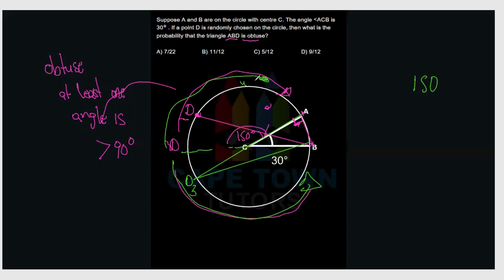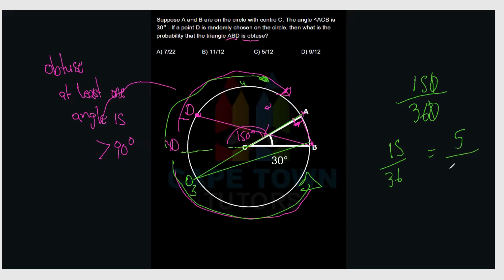So if D appears anywhere in that 150-degree arc, the triangle is obtuse, out of the entire circle which is 360 degrees. The probability is 150 over 360. Simplifying by a factor of 3 gives 5 over 12. The answer is option C. Hopefully that makes sense — drop a question in the comments below if not.